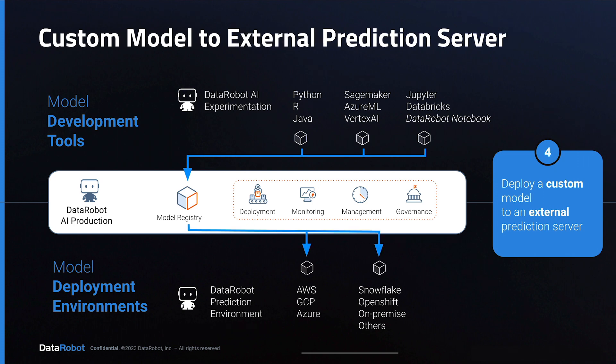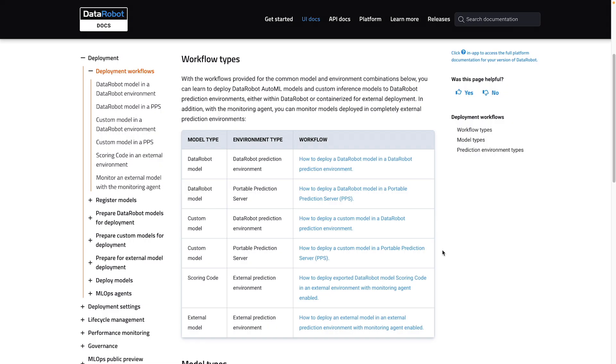The fourth option is to use the DataRobot model registry to deploy a custom model to an external prediction server. Again, the use of the word custom means that the model was developed outside of DataRobot AI experimentation, and the use of the word external means that the environment is entirely separate from your DataRobot software. The custom model comes into the model registry and then is deployed externally. The portable prediction server is the typical method for accomplishing this, which corresponds to row number 4 in this table.